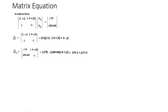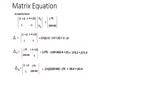For Δ1, we replace the first column with the output vector, cross-multiply, and simplify to get the value. For Δ2, we replace the second column with the output, cross-multiply, and simplify. Then v1 = Δ1/Δ — plug in the values of Δ1 and Δ and solve.